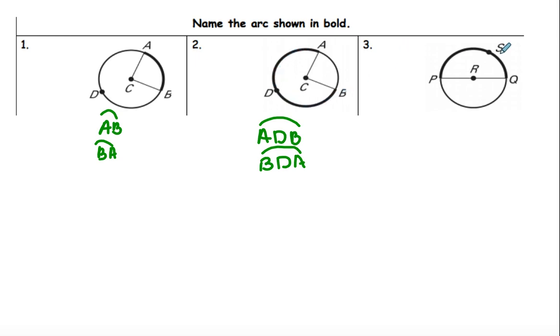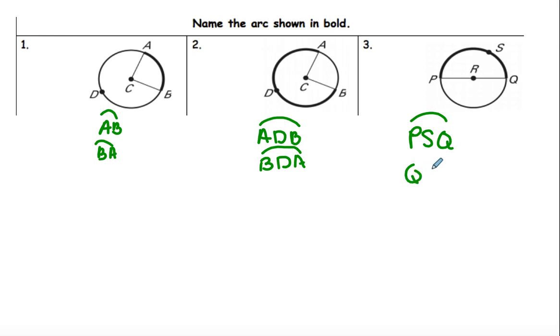Number three is a semicircle. So for a semicircle, we use three letters. It's going to be PSQ, or it can be QSP. The P has to be in the middle.